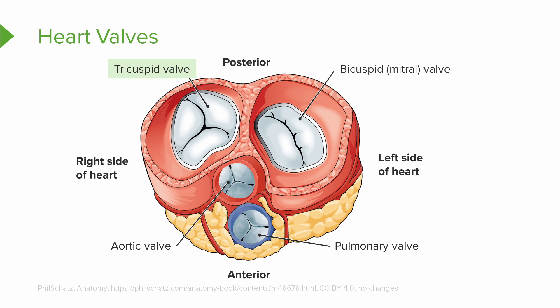Let's take a closer look at these valves. First, we have the tricuspid valve. The tricuspid valve is an atrioventricular valve that is going to be between the right atrium and the right ventricle. Next, we have our bicuspid valve. The bicuspid valve is also an atrioventricular valve found on the left side of the heart, between the left atrium and the left ventricle.